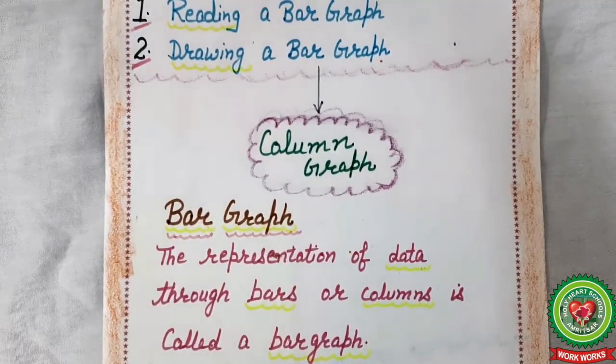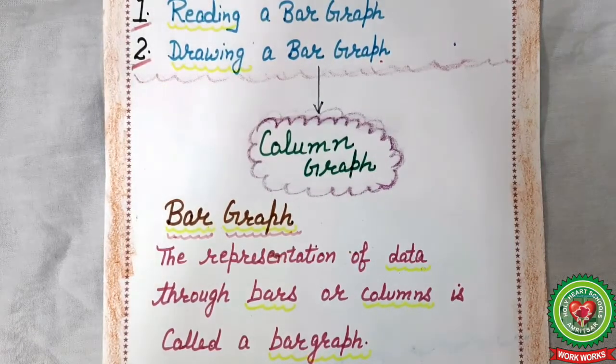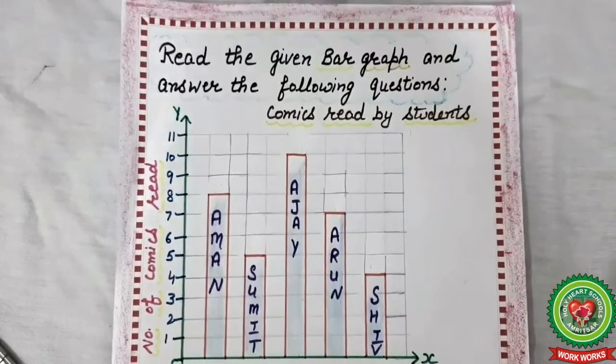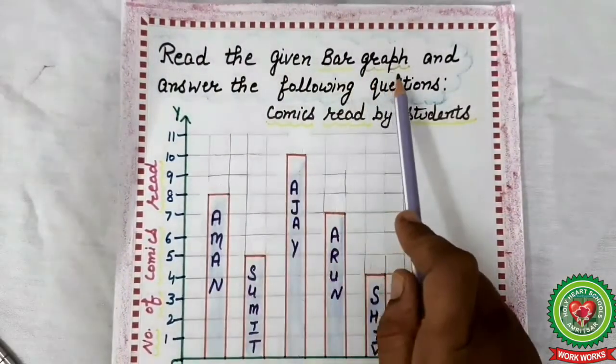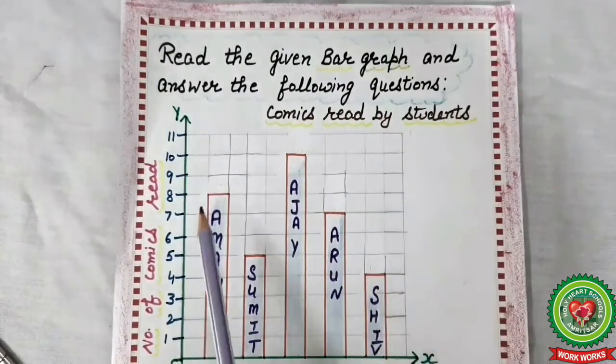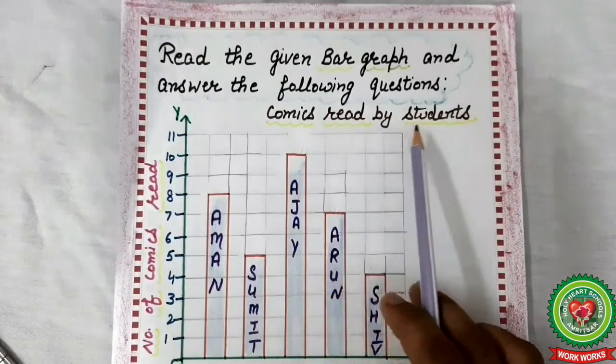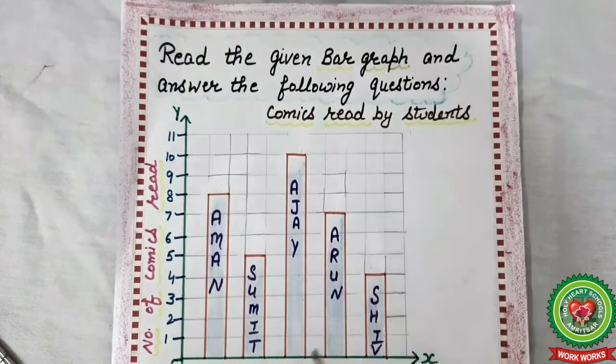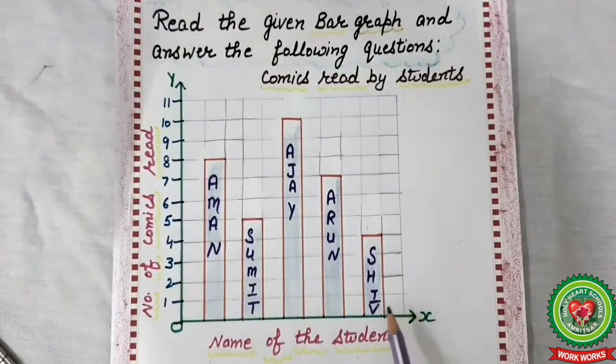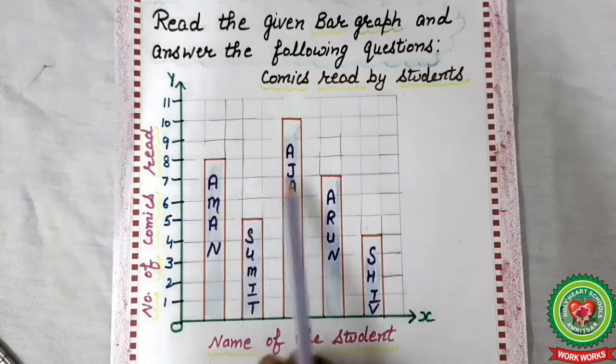Students, now you will learn reading a bar graph. Let's understand it with one example. Read the given bar graph and answer the following questions. This bar graph is based on comics read by students. It is a bar graph where information is represented through bars and these bars are in rectangular shape.